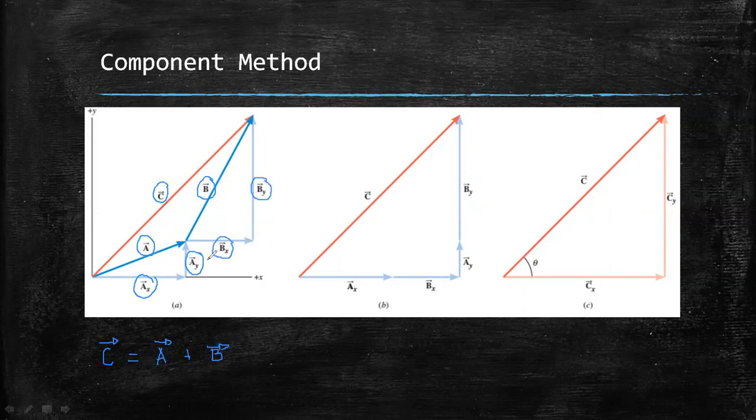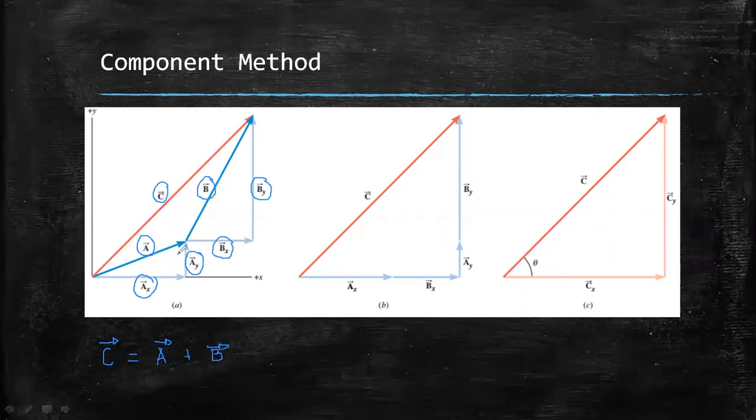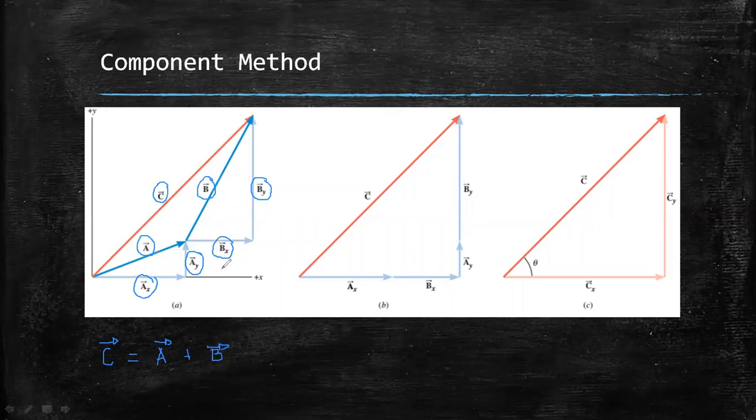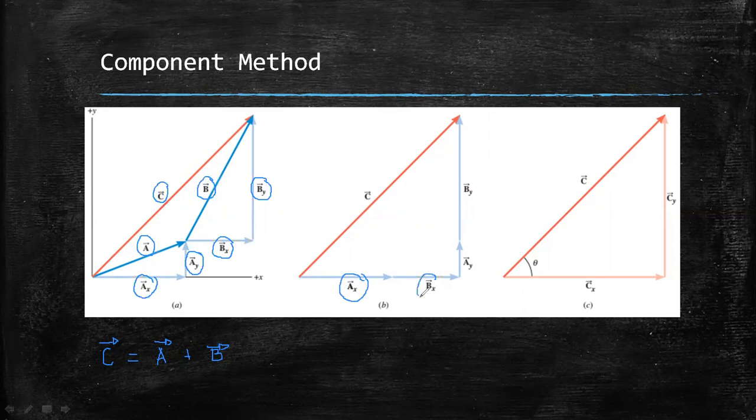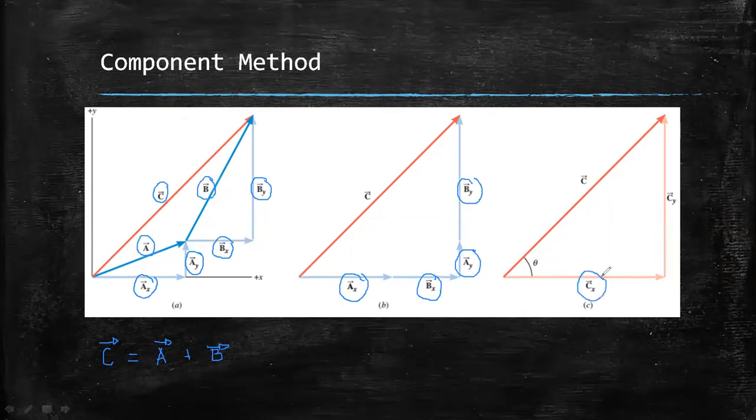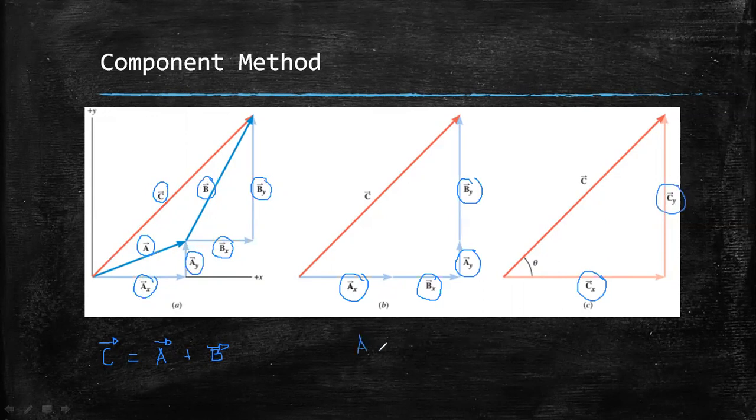Now, the next procedure after getting each component of each vector is to add the components along the same axis, which means Ax and Bx and also Ay and By. By adding them, we can get the resultant x component and the resultant y component. Ax plus Bx gives the resultant x component, and Ay plus By gives the resultant y component, which makes perpendicular vectors.